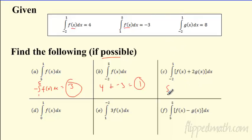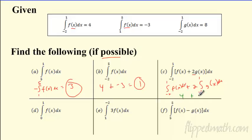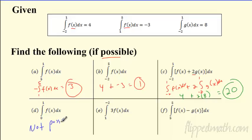Can I break up this next one? Sure — I can integrate f(x), and notice there's a 2, which I can pull out front. So I'm using both the addition property and the constant property. From negative 2 to 1 of f(x) is 4, plus 2 times the integral of g(x), which is 8, giving 4 plus 16, which is 20.